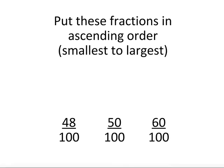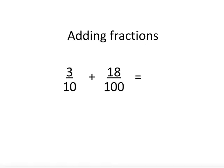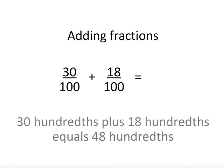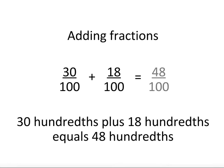Knowing how to convert fractions into equivalent fractions is important for understanding the size of them. It is also important for adding fractions. Here we have 3 tenths plus 18 hundredths. To solve this we convert 3 tenths into 30 hundredths. Now our problem is 30 hundredths plus 18 hundredths, which is 48 hundredths.